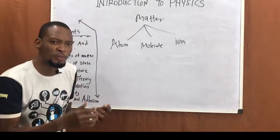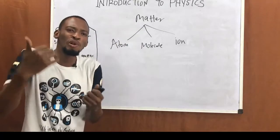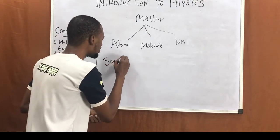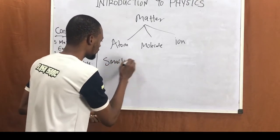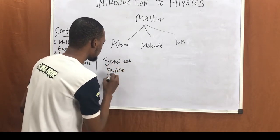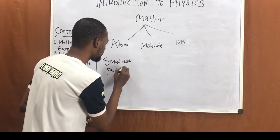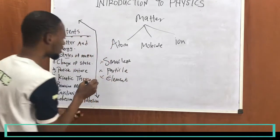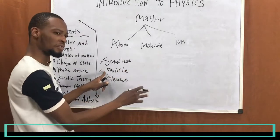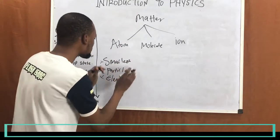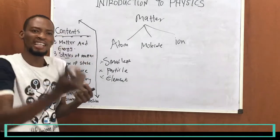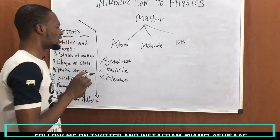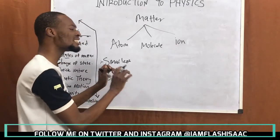An atom is the smallest particle of an element — the smallest particle of an element that can take part in a chemical reaction. This shows that matter contains particles. Now we've introduced a new term: what is an element?